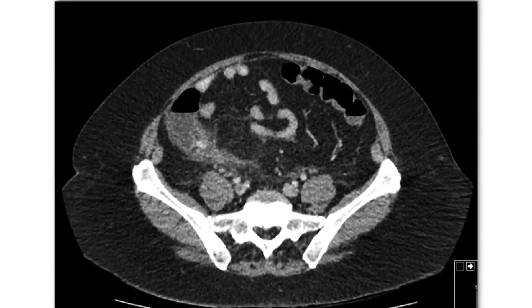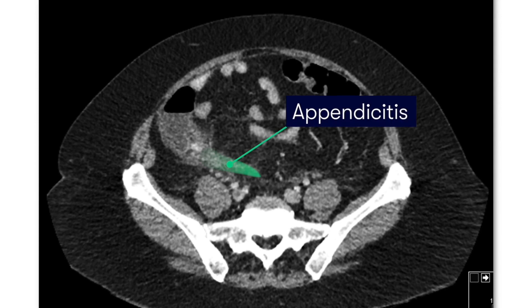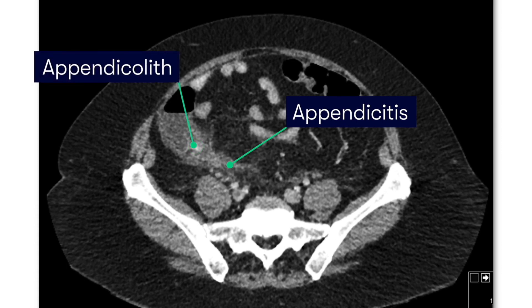Looking at this axial image, we can see that it shows an inflamed appendix heading towards the midline. Additionally, we can also see an appendicolith. When identified, appendicoliths have a positive predictive value for appendicitis of 75%.